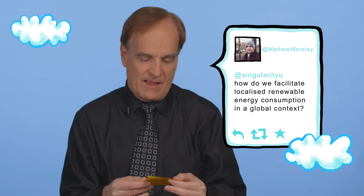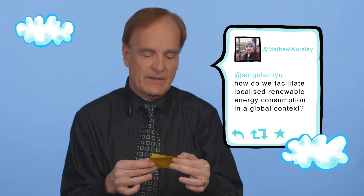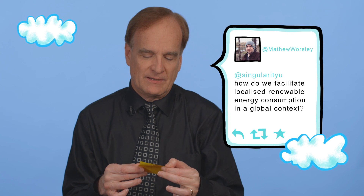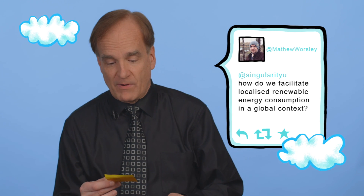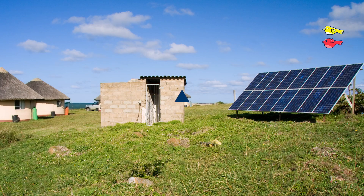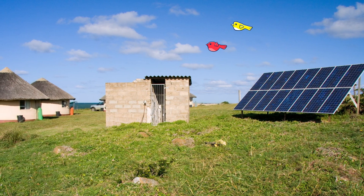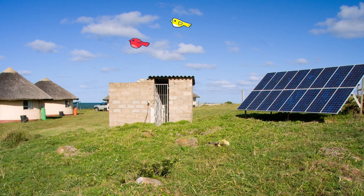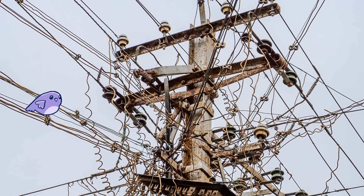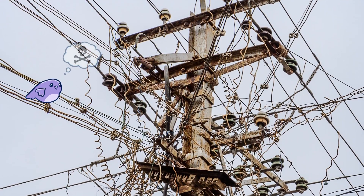A tweet from Matthew Worsley: how do we facilitate local renewable energy consumption in a global context? Excellent question, Matthew. One of the best ways that I think we're going to see is characterized by micro grids — little networks that can be used in places where the conventional grid is unstable or unreliable.